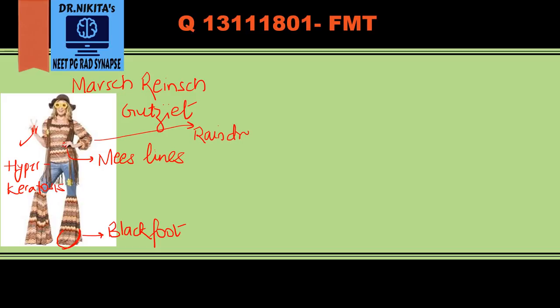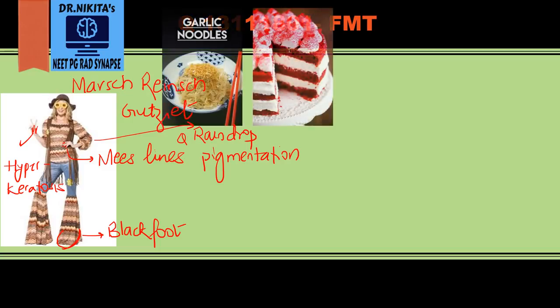When she goes out for dinner, there is rain, so she gets raindrop pigmentation on the way because of the rainfall. This represents the raindrop pigmentation sign seen in arsenic poisoning.